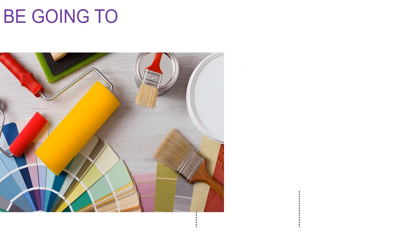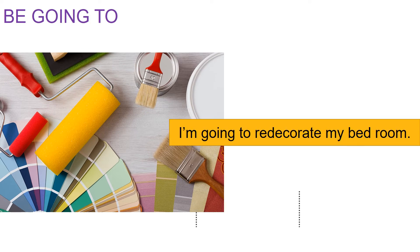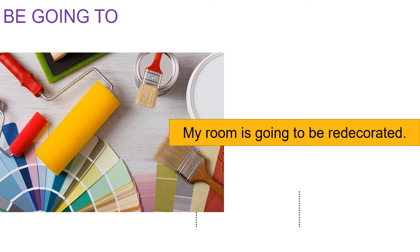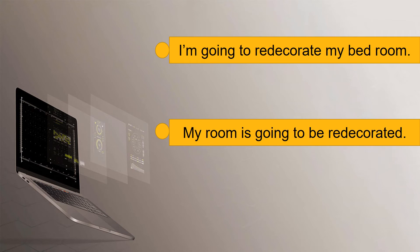Now let's look at 'be going to' in active and passive sentences. The first sentence is: 'I'm going to redecorate my bedroom.' The second sentence is: 'My room is going to be redecorated.' Let's take a look at these two sentences.